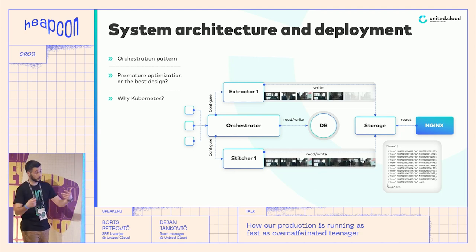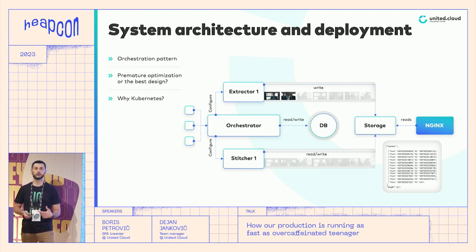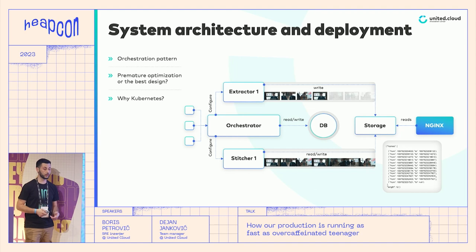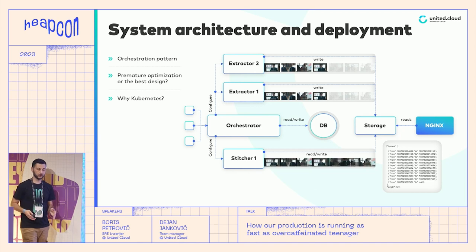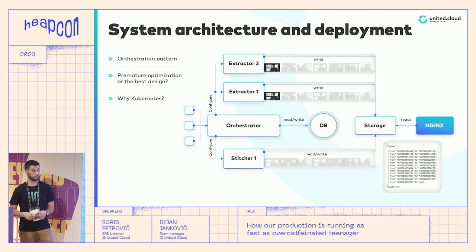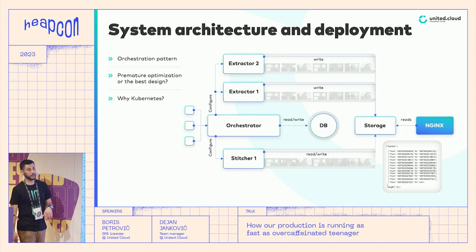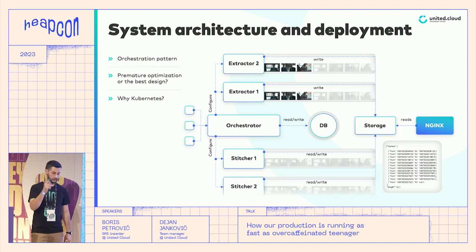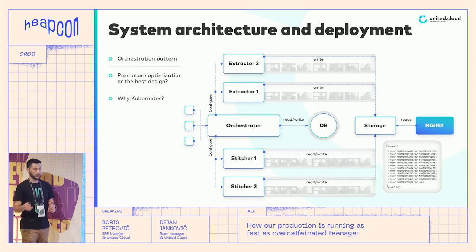We also heavily use Kubernetes' ability to easily scale services even at runtime. When a new channel arrives, the orchestrator looks into its own database and checks if there is an existing instance that can process the new channel. If not, the orchestrator communicates directly to the Kubernetes cluster and scales new extractor and stitcher instances that start doing their magic.